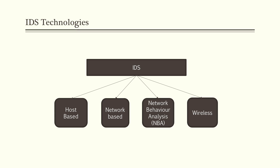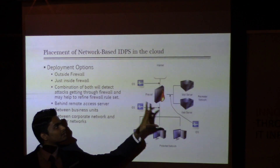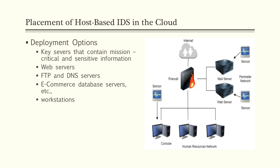So where are IDS technologies actually deployed in the cloud? They can be placed in server sites where we actually maintain our crucial datasets or files, or network-based — that is the networks just before the firewalls. We can actually place our sensors like this, and generally to maintain complete security of the cloud we'll be using more than two IDPS technologies.